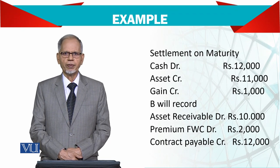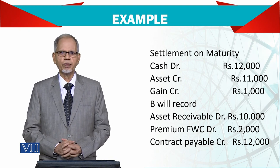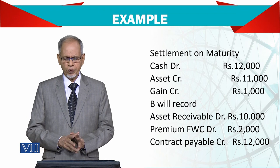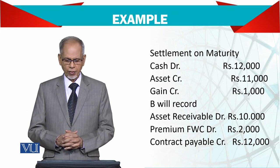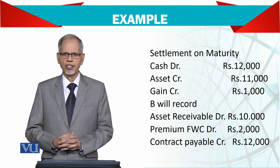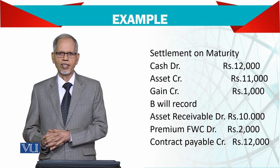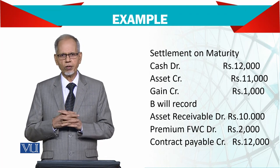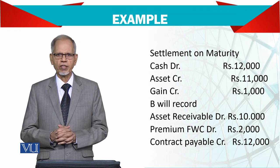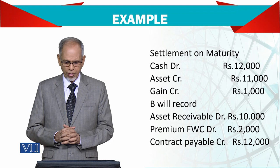अब settlement on maturity: आपने उसको asset देना है और उसने आपको पैसे देने हैं। Cash को debit करेंगे 12,000 — जो तय हुआ है। लेकिन आपको market से asset खरीदना पड़ रहा है 11,000 का, तो asset को credit करेंगे 11,000 से और gain credit करेंगे 1,000 से। अगर asset 13,000–15,000 का हो जाता है तो loss होगा; इस case में 11,000 का खरीदा और 12,000 में बेचा तो 1,000 का gain हुआ।